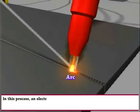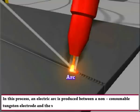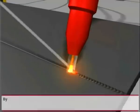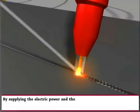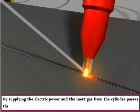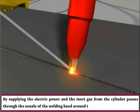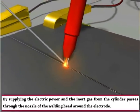In this process, an electric arc is produced between a non-consumable tungsten electrode and the workpiece. Electric power is supplied and inert gas from the cylinder passes through the nozzle of the welding head around the electrode.